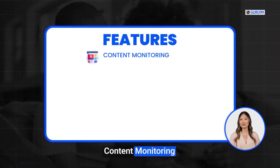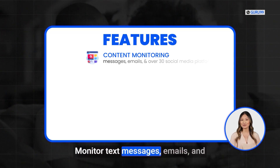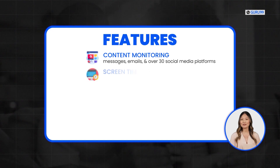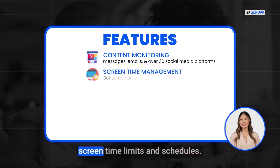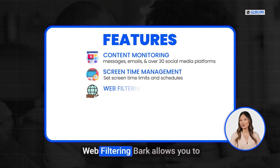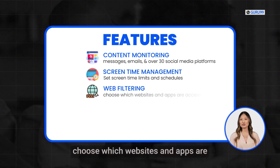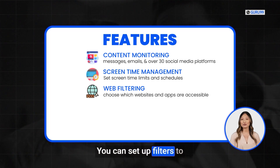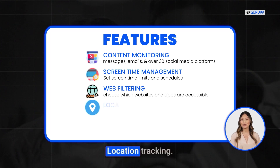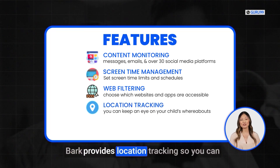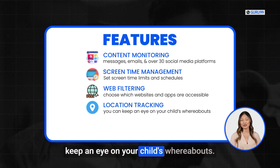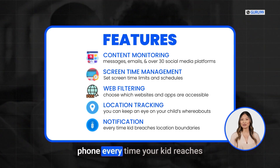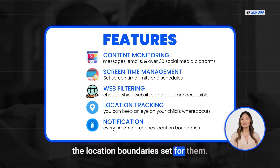Features include: content monitoring — monitor text messages, emails, and over 30 social media platforms; screen time management — set screen time limits and schedules; web filtering — choose which websites and apps are accessible on your child's device and set up filters to block inappropriate content; location tracking — keep an eye on your child's whereabouts; and notifications — the tool will send alerts on your phone every time your child reaches the location boundaries set for them.